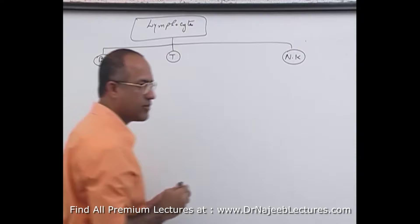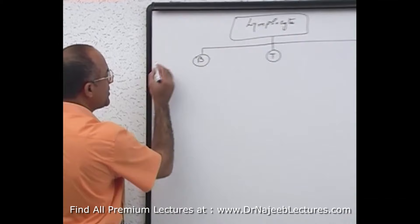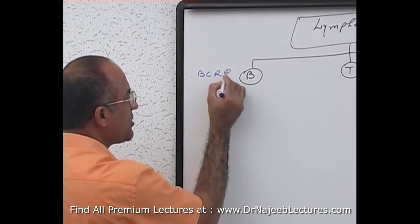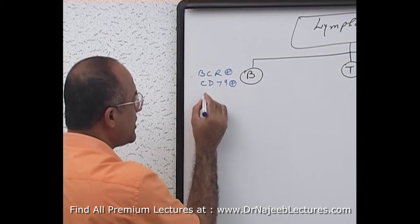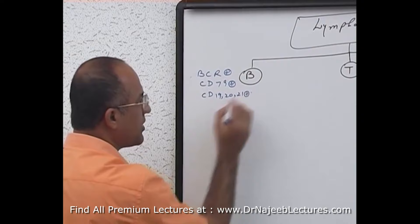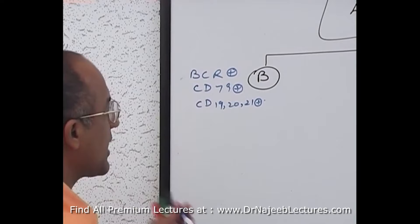What are the specialties of B cells? B cells are BCR positive, B cell receptor positive, CD79 positive, and CD19, CD20, CD21 positive. These are the features of B cells, and whenever B cells are activated they convert into plasma cells.